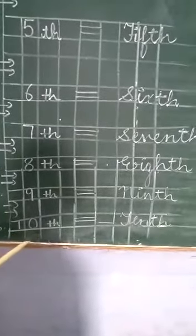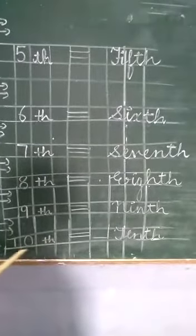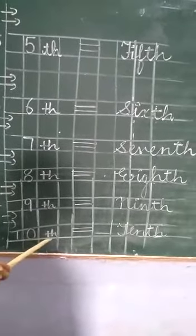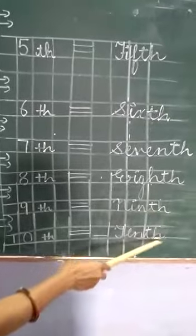Then you write 10, tenth. The last number of ordinal. The spelling is T-E-N-T-H, tenth.